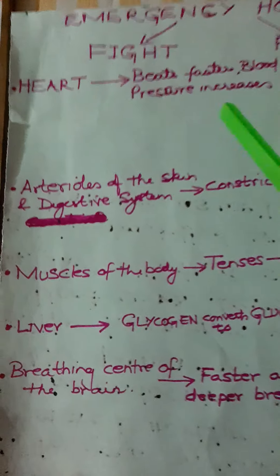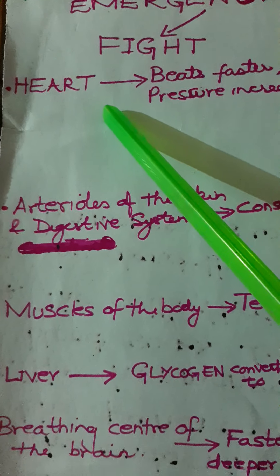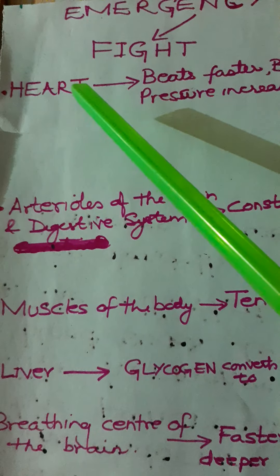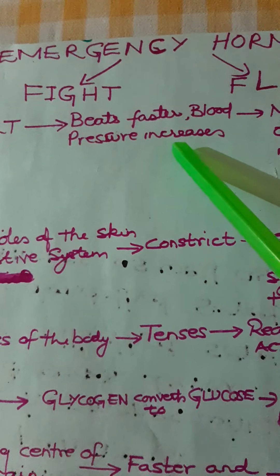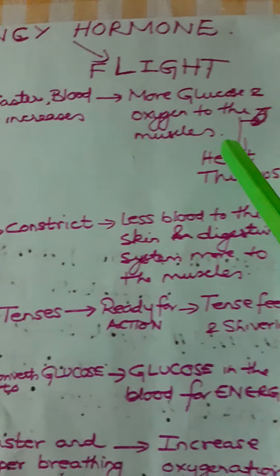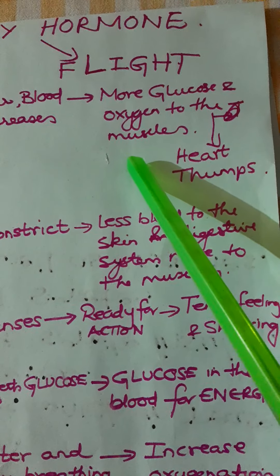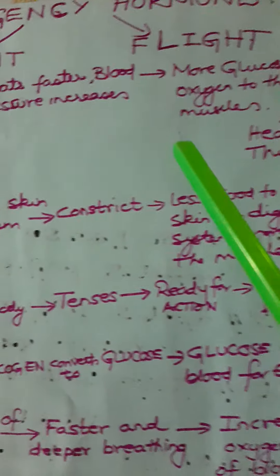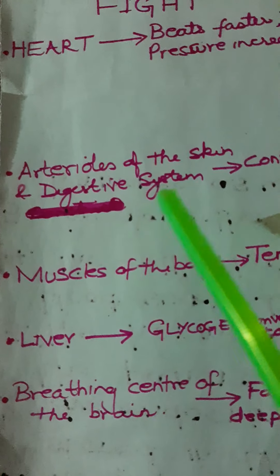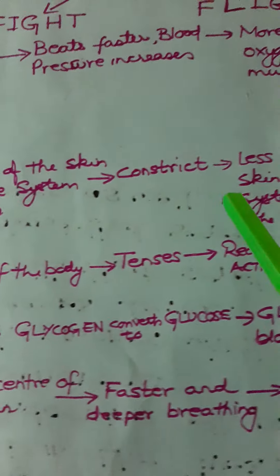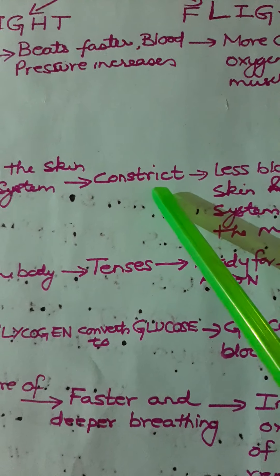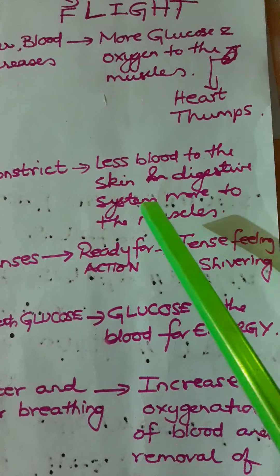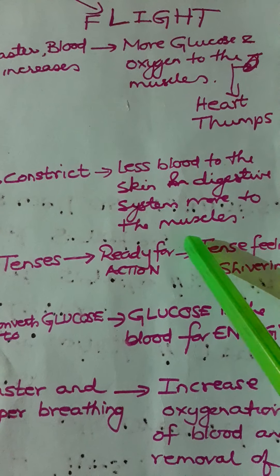When adrenalin is secreted, the heart starts beating faster, blood pressure increases, and more glucose and oxygen is supplied to the muscles. Also, the arterioles of the skin and digestive system constrict — meaning they become small — so less blood is supplied to the skin and digestive system.